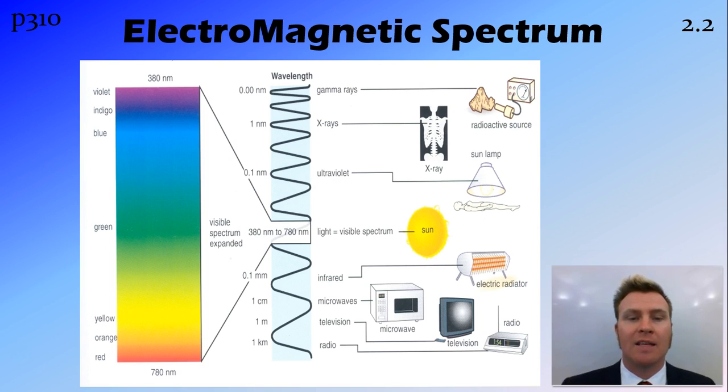The spectrum looks a bit like this. We have small wavelengths at the top with our gamma rays, moving through, or wavelengths getting larger, into x-rays, ultraviolet or UV rays, visible light.